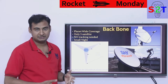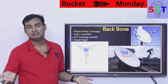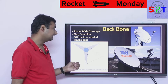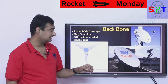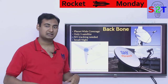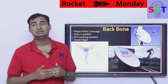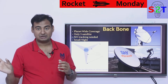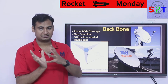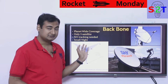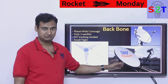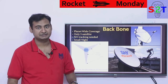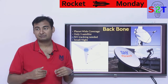Beyond coverage, geostationary provides what we call non-tracking. In MEO constellations — medium Earth orbit — you have to track satellites as they move, and your dish has to follow them. With geostationary, you don't have to do anything. You just point your dish at one exact fixed position in the sky and you're done. You never have to adjust it after that.